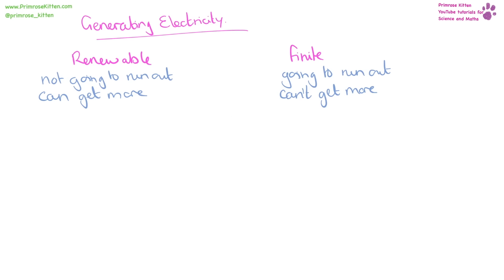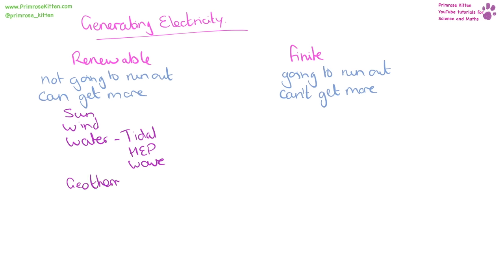When we're thinking about generating electricity we can either do that with a renewable source or with a finite source. A renewable source is one that isn't going to run out, whereas a finite source is going to run out. Renewable sources include things like the sun, the wind, water — including tidal power, hydroelectric power, wave power — and geothermal power. Whereas a finite resource is going to be a fossil fuel: coal, oil, gas, or nuclear power.